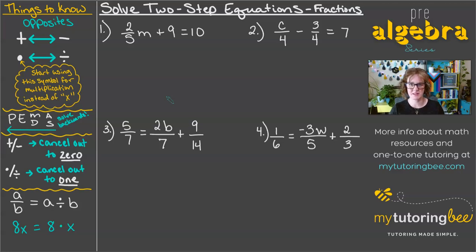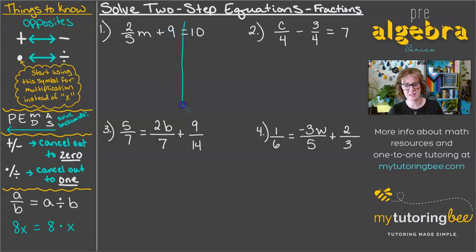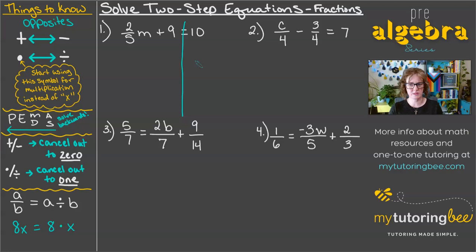It's really not so bad as long as you remember the rules of working with fractions: adding, subtracting, multiplying, dividing. Let's go ahead and split this equation up. I like to draw a line down through the equal sign. That gives me a left side and a right side, and helps me remember that whatever I do to one side of the equation, I need to do to the other side as well.